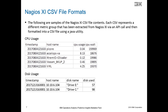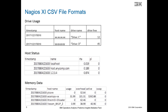The following slides show the list of performance metrics that are retrieved by the API call to the Nagios XI and formatted into CSV files. The first CSV file is CPU usage, which consists of the host name, the CPU usage, and the CPU wait time. The second CSV file shows the disk usage with host name, disk name, and percentage of disk used. Other CSV files shown consist of drive usage, host status, and memory data.